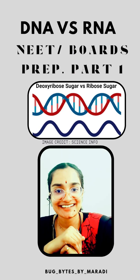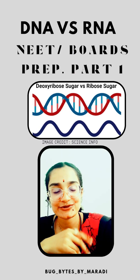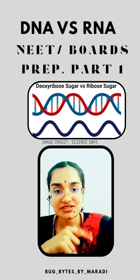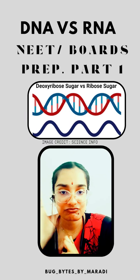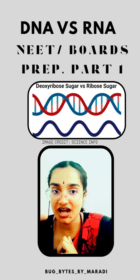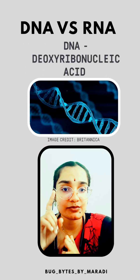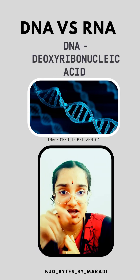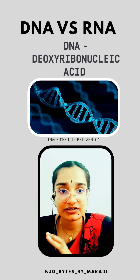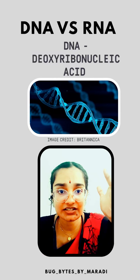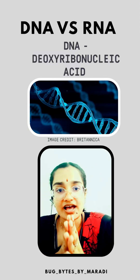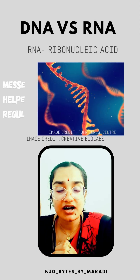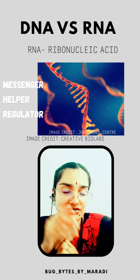Hello, welcome back to my channel. If you're preparing for exams and want to understand what DNA and RNA are, please watch this Part 1 video on the difference between DNA versus RNA. So DNA is deoxyribonucleic acid, a nucleic acid which stores the genetic information in the cell or organism. DNA is the genetic material, and its full form is deoxyribonucleic acid.